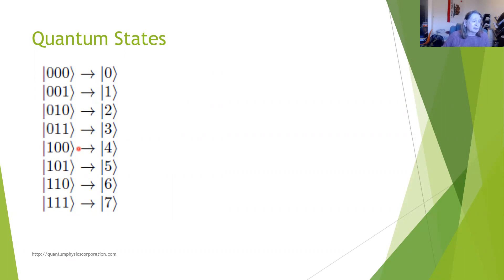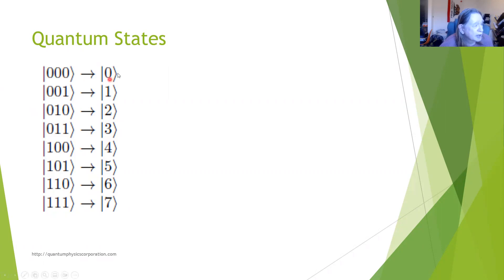These quantum states are represented by integers. I've shown here the 3-qubit system, so there are 8 states. You can think of this as 3 particles — 3 spinning electrons, 3 polarized photons, or just 3 qubits in a quantum computer, 3 transmons or trapped ions. We're going to use the binary encoding representation. 0, 1, 0 is binary for 2; 0, 1, 1 is binary for 3. These are the states we use in the quantum Fourier transform.